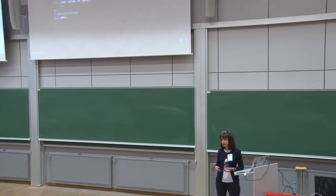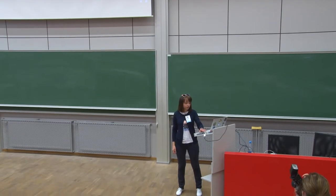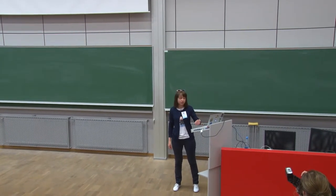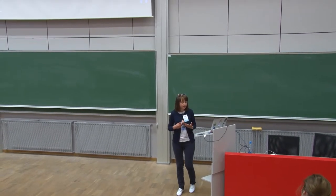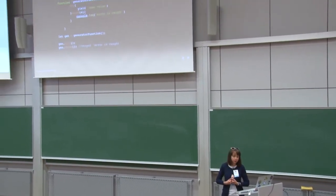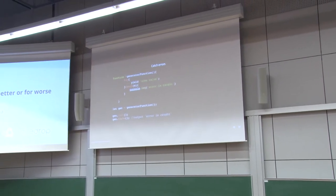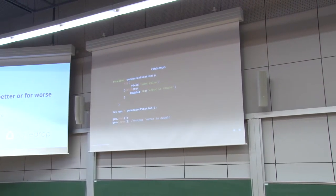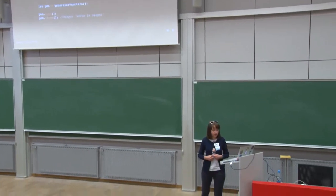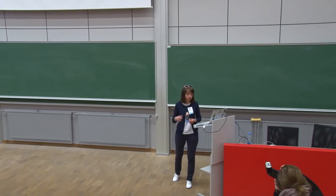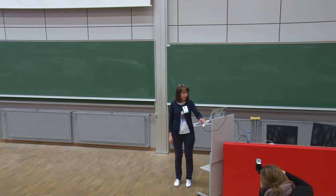You can also iterate over the generator with a for-of loop or with destructuring — it will just call the next method of the generator object for you and execute the whole generator function. You can also throw an error to the generator object with generator.throw(), and inside you can try and catch it. Before calling throw, you have to call next to start the execution.